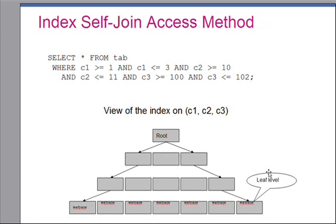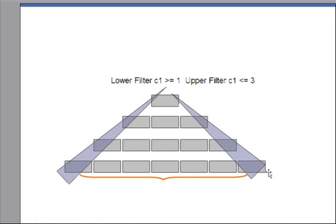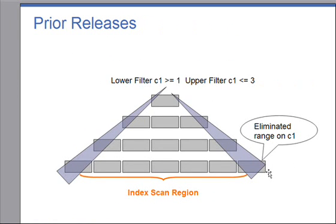Let me show you examples of how the index self-join access method is actually implemented. This shows how IDS evaluated this query in pre-releases: we used the filter c1 >= 1 AND c1 <= 3 as the start and stop key for this index and scanned the whole index region.